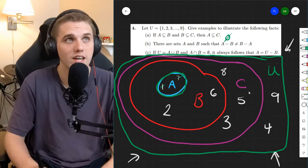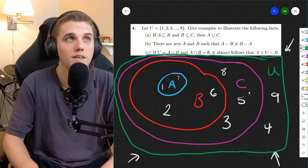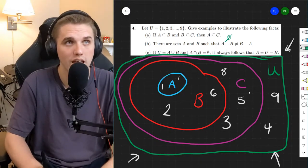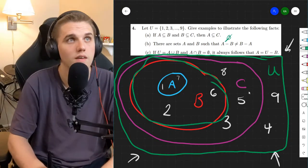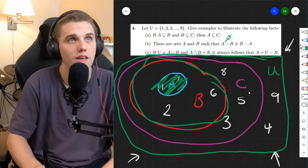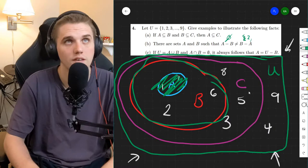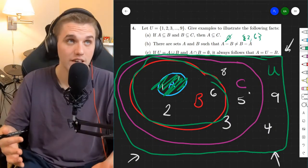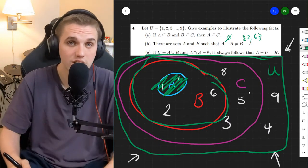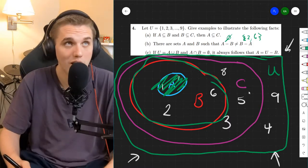And on the right-hand side, we have B minus A. So we take all of B and we get rid of A. And we see what's left. That's the set containing 2 and 6. So it turns out that this picture is consistent still with part A and part B.